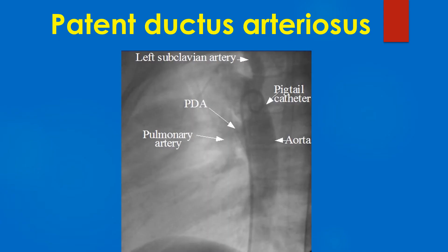PDA demonstrated by an aortogram. The aortogram was obtained after injecting radio-contrast dye into the aorta using a catheter. Dye is seen entering the pulmonary artery through the PDA from the descending aorta.